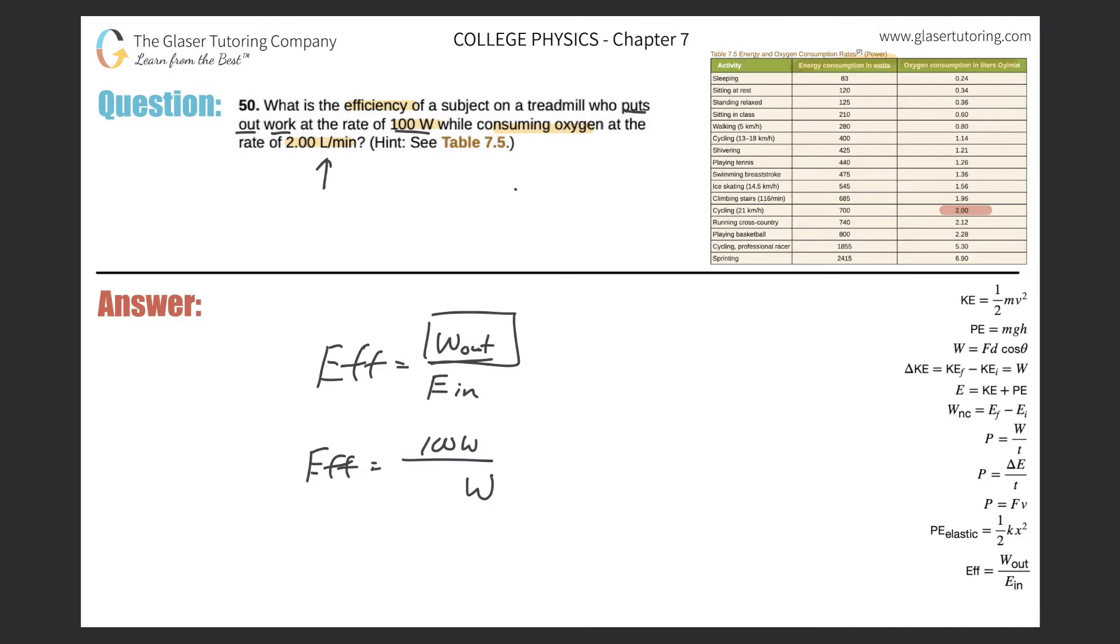It looks like it's about here, not about there, it is there. And then the power associated with that in watts is 700. So if you are consuming two liters per minute of oxygen, you are then producing 700 watts of power. So that's actually the denominator value here, 700.